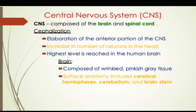The first thing is the CNS — the central nervous system. The central nervous system is composed of the brain and the spinal cord. The elaboration of the anterior portion of the CNS is called cephalization, which refers to the increase in the number of neurons in the head. The highest level of cephalization is reached in the human brain.